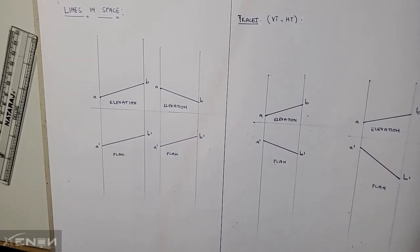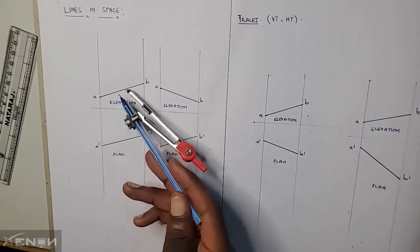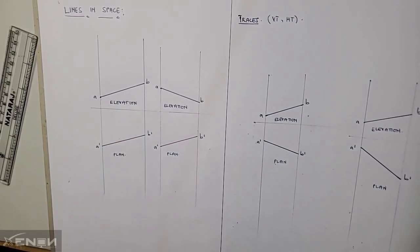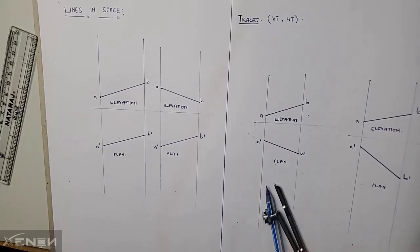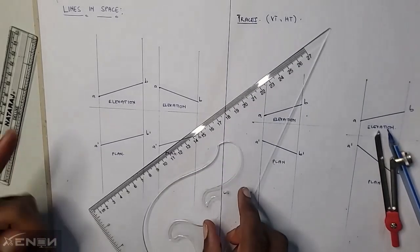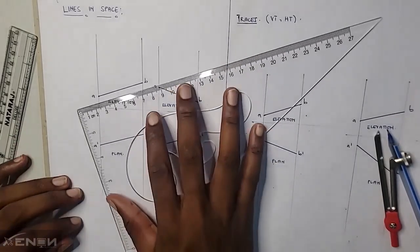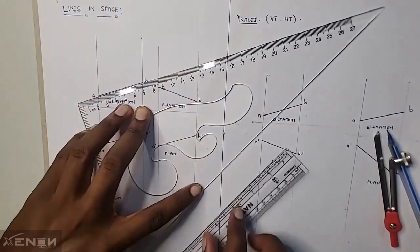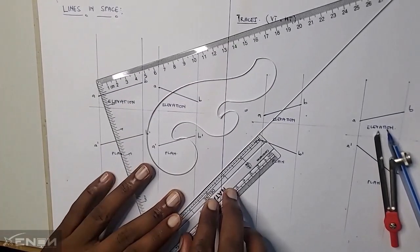First things first, we are going to determine the true length of line AB. We are given the elevation and we are given the plan. To do this we are going to use two methods. The first method is the auxiliary method, which is very simple. You simply choose one of the two views — in this case I'm going to choose the elevation — and then draw lines that are perpendicular to this view.